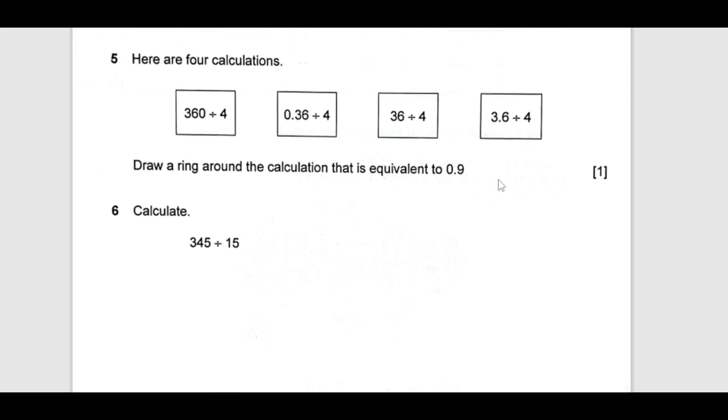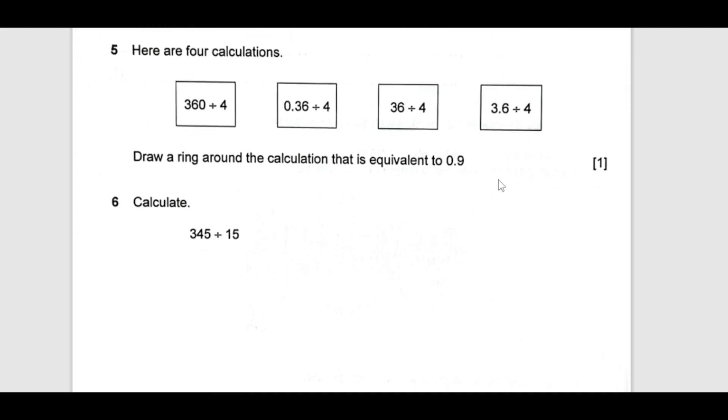Now, number 5, here are 4 calculations. Draw a ring around the calculation that is equivalent to 0.9. As this is paper 1, we cannot use calculator. You have to make these calculations on your own. Then this is going to be 94 times 9. This is going to be 0.09 as there is a decimal here. This is 9 and this is 0.9. Drawing around the calculation which is equivalent to, we are going to put ring here.